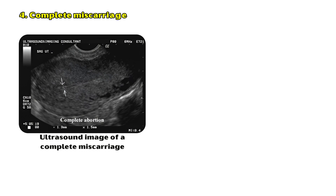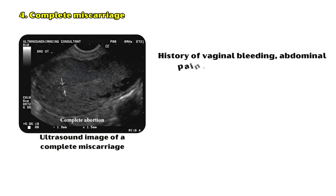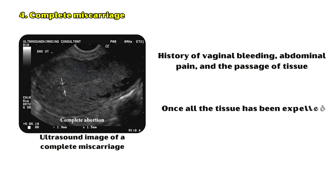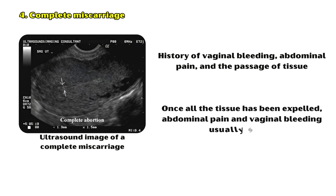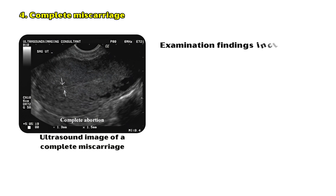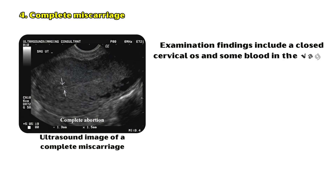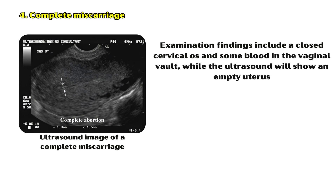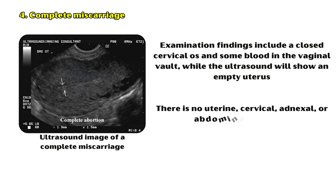Complete miscarriage: In this final stage, a patient will have a history of vaginal bleeding, abdominal pain, and the passage of tissue. Once all the tissue has been expelled, abdominal pain and vaginal bleeding usually subside. Examination findings include a closed cervical OS and some blood in the vaginal vault, while the ultrasound will show an empty uterus. There is no uterine, cervical, adnexal, or abdominal tenderness.